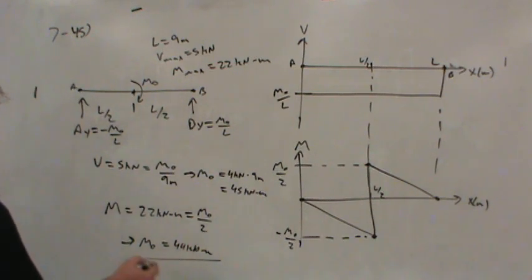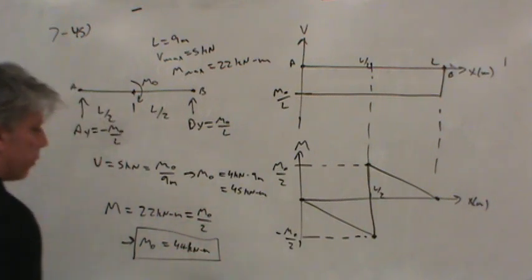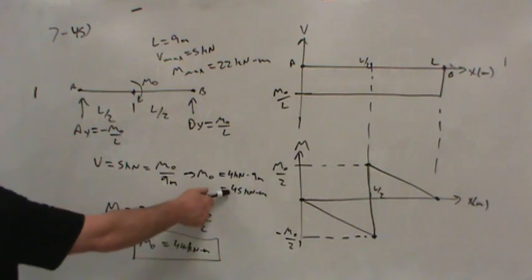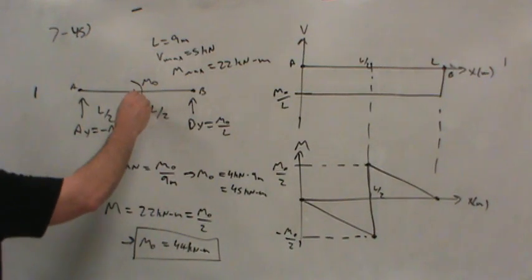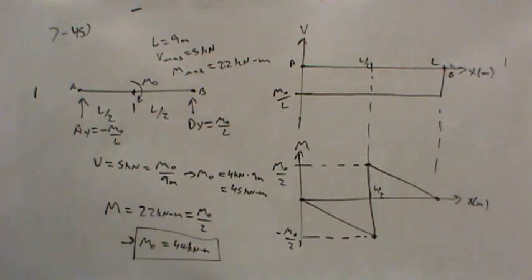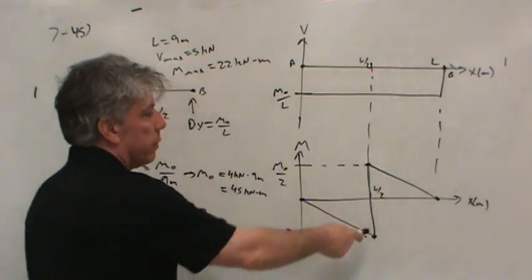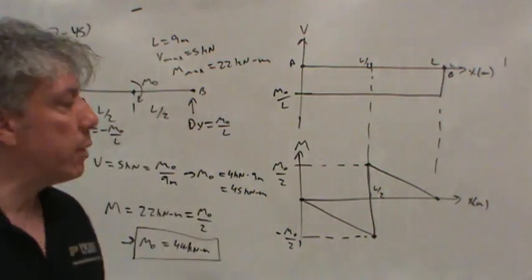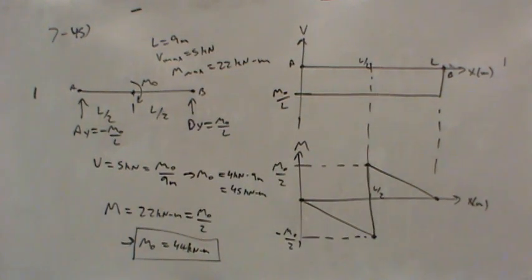Now, which one matters? Well, the smaller one matters, right? By the time we've reached 44 kilonewton meters, the beam will begin to fail due to the moment. And so we can never reach this 45 kilonewton meters. So the maximum external moment that can be applied is 44 kilonewton meters. It's important to understand there's a difference between an externally applied moment and an internal moment, a moment within the beam material. And as we see here, the moment within the beam material is half of the externally applied moment, at least at the maximum point, which is in the center of the beam.